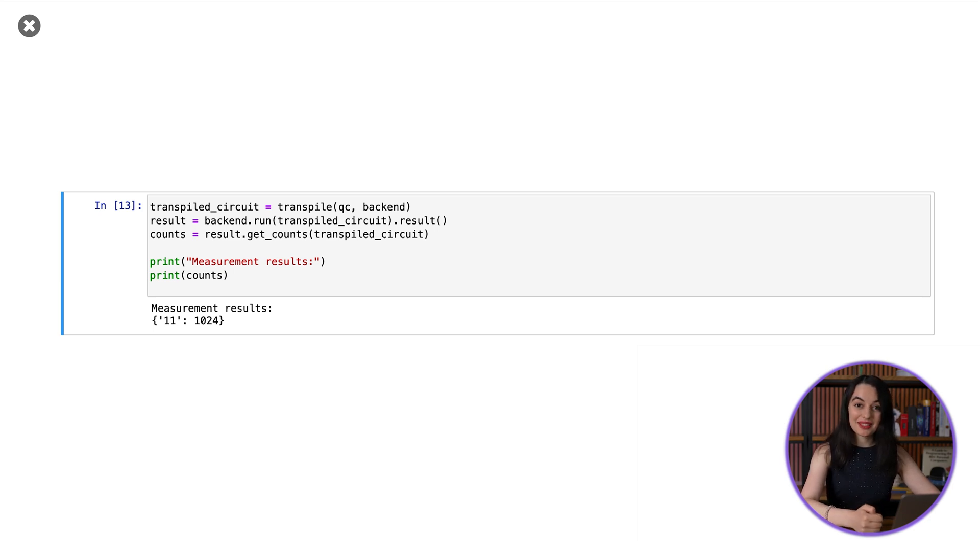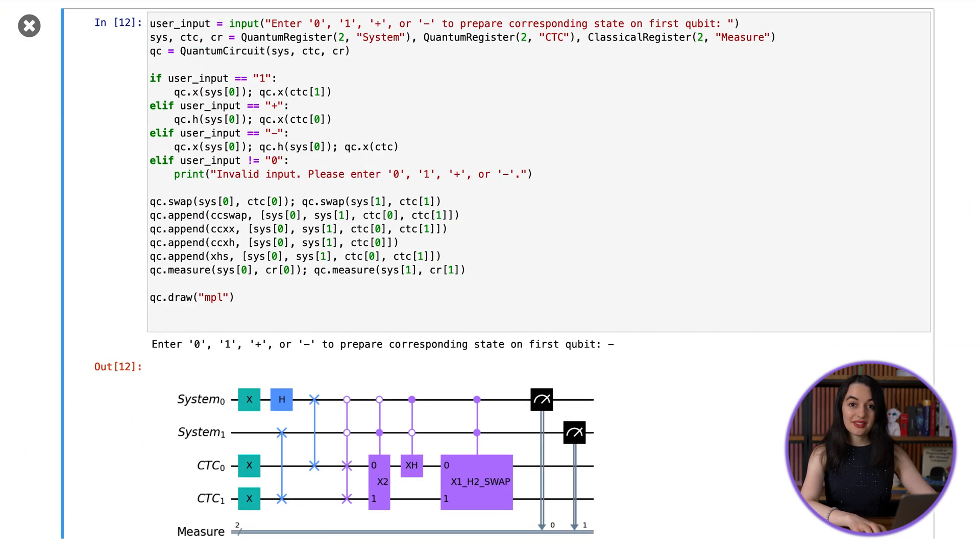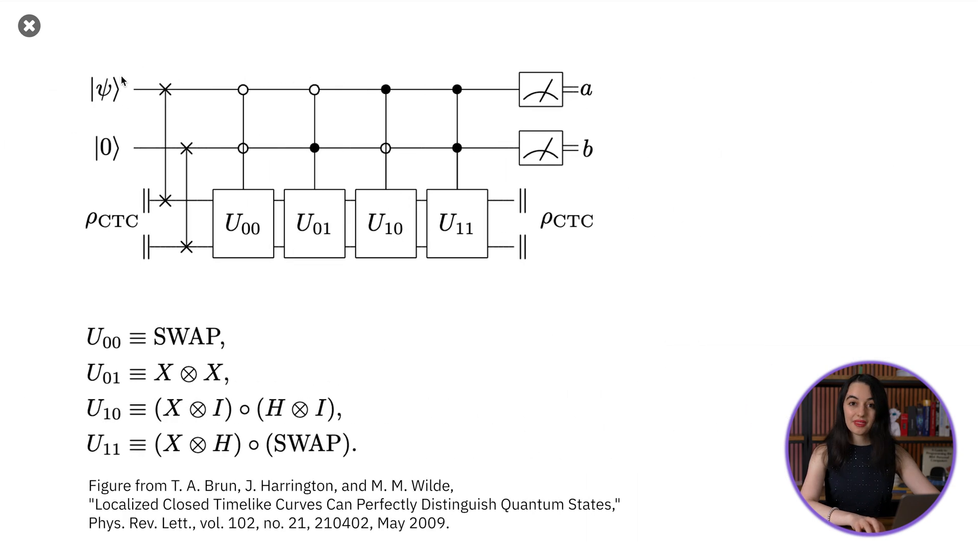So we can distinguish any of the four possible input states with a single measurement. Now from an information theory perspective, we achieve something extremely surprising if we could really implement this circuit. We gain two bits of classical information from measuring a single input qubit. Even though a qubit can normally only store one bit of information. Even worse, we could construct a similar circuit to distinguish between any number of non-orthogonal states. This means that we could store an unbounded amount of classical information in a single qubit. You could try making this circuit yourself, or even one that violates the no-cloning theorem.